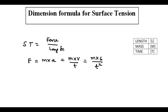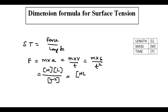Now I am going to substitute the dimension formula for mass, time, as well as for the displacement. For M, I am going to substitute the capital M, and for displacement I am going to substitute the capital L, and that is divided by the time that is equal to T square. So if I bring it to the top, I am going to get M L T power minus 2.